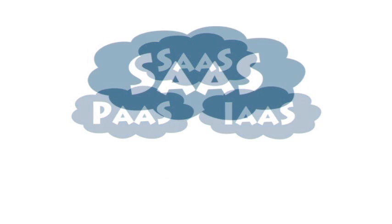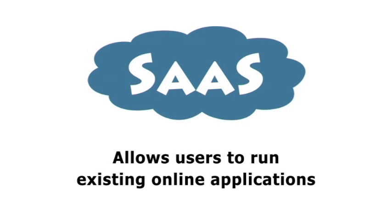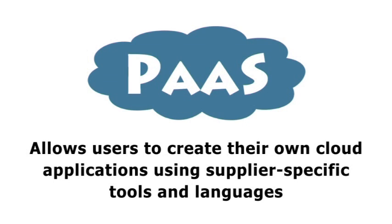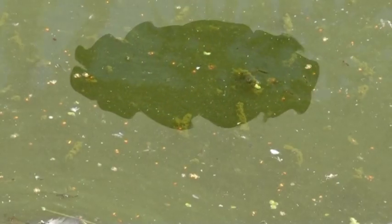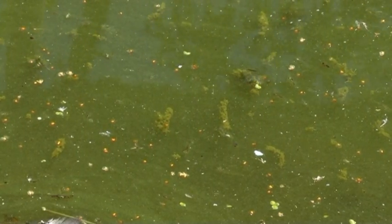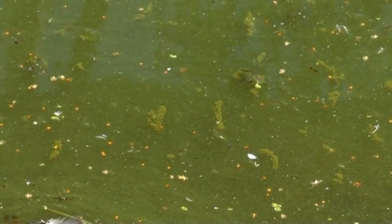In basic terms, SaaS allows users to run existing online applications. PaaS allows users to create their own cloud applications using supplier-specific tools and languages. And IaaS allows users to run any applications they please on cloud hardware of their own choice. That might right now still be as clear as stagnant pond water, so let's work through it again in more detail.